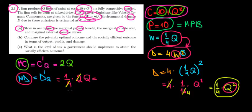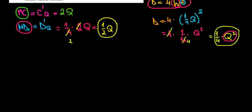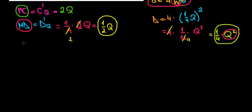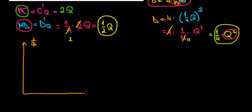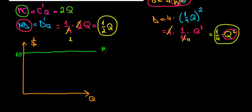The 2 and 4 simplify, leaving us with marginal damage equal to (1/2)Q. Now with all three expressions in hand, let's draw the graph. We'll put price or dollars on the vertical axis and quantity on the horizontal axis. The marginal private benefit is constant at $10, so we draw a horizontal line at 10.